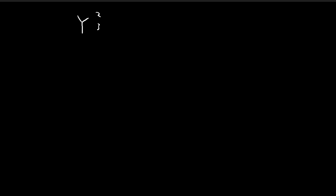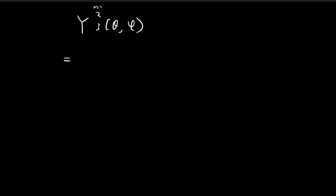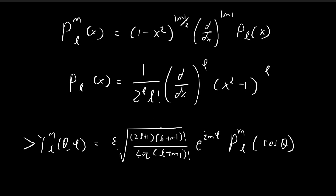In this video we're going to focus on constructing the function Y₂³(θ,φ). We're going to do that by considering three formulas. We're dealing with a case where m is equal to 2 and l is equal to 3, so all we have to do is substitute everything into the formula.